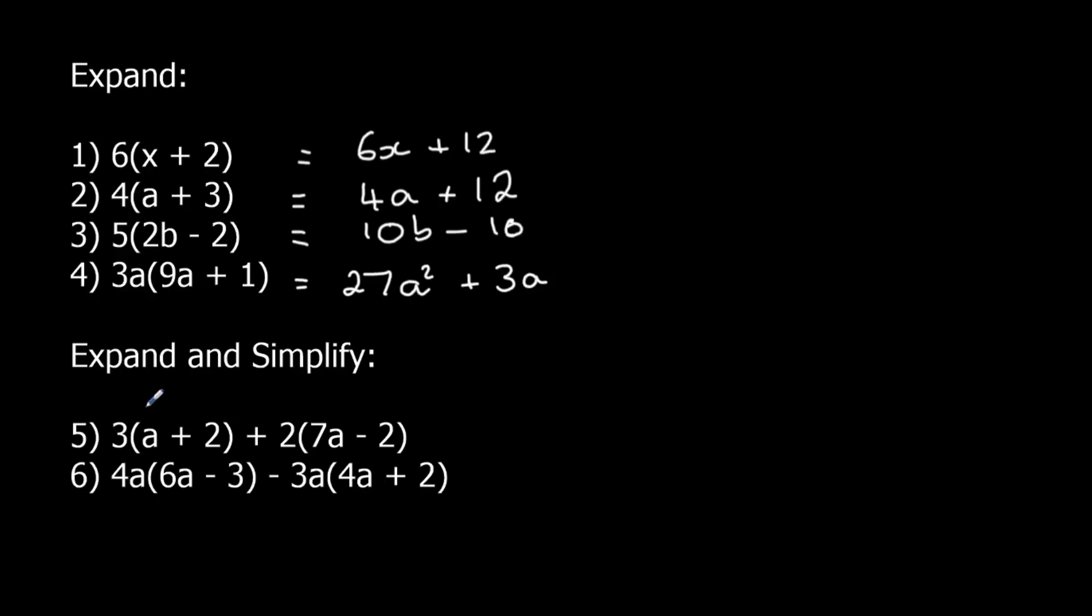And the expand and simplify. So I've got 3a plus 6 plus 14a minus 4. So I've got 3a and 14a, which is 17a. And 6 take away 4, 2.